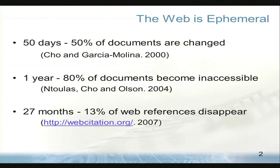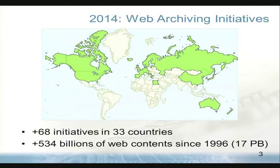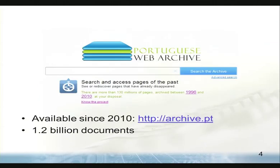Many of the information that we are adding to the web today, and some of this information is important, will disappear after one year. Fortunately, due to this problem, several web archiving initiatives have been created since 1996. Here we have a world map with the locations of these initiatives in green. At the moment there are at least 68 initiatives spread across 33 countries, and together they archive more than 17 petabytes of data. I helped to create one of these initiatives, the Portuguese Web Archive, where I used to conduct part of my research.